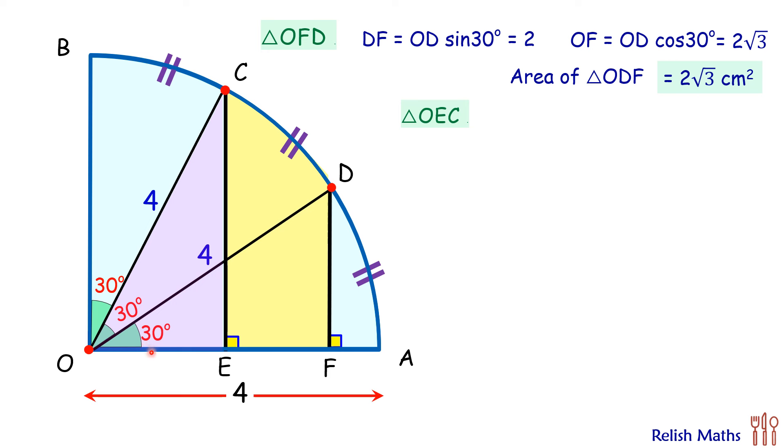Solving it we will get CE as OC times sin 60, which is 2 root 3, and OE will be OC cos 60 degrees, which equals 2 cm.